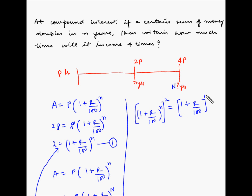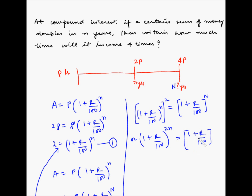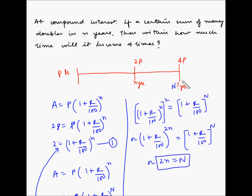Since the bases are the same, we equate the exponents: 2n = N. So 2 times small n is equal to capital N. Therefore, within 2 times n years, the amount will become 4 times itself.